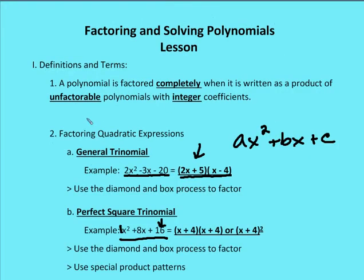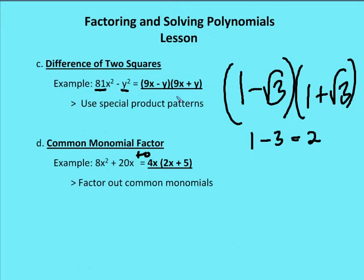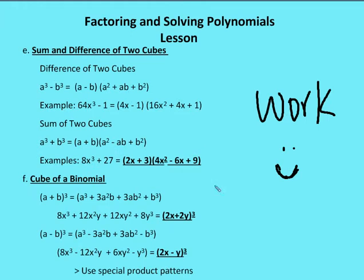To recap: for a general trinomial we use the diamond and box process. For special product patterns we have the perfect square trinomial and the difference of two squares. And we can also find and factor out a common monomial factor. We'll learn more special product patterns in just a moment.